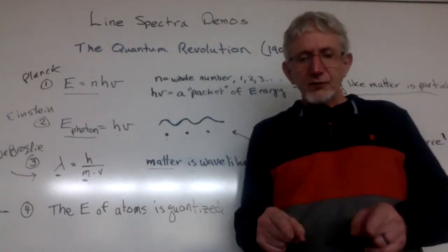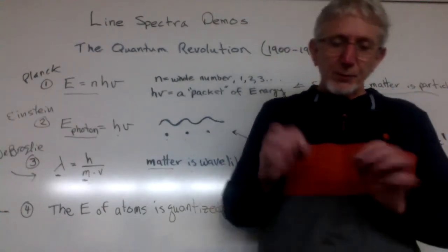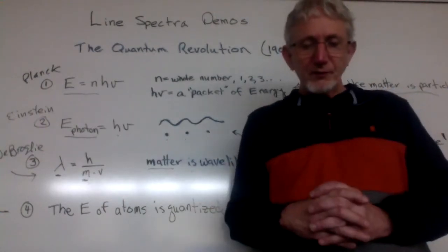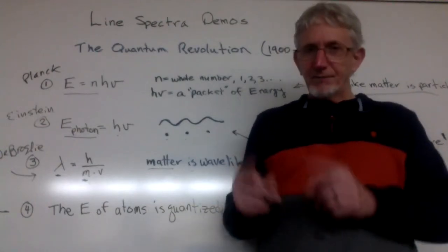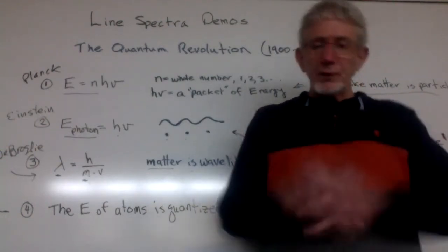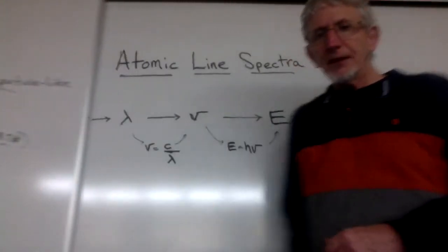That atoms can only exist in very specific energy states, very specific discrete energy states. And atomic line spectra are demonstrations of that energy quantization of atoms. As we're showing here.